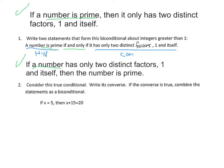Next example: consider this true conditional and write its converse; if the converse is true, combine the statements as a biconditional. The conditional is: if x equals 5, then x plus 15 equals 20. That statement is true. The converse switches the hypothesis and conclusion: if x plus 15 equals 20, then x equals 5.